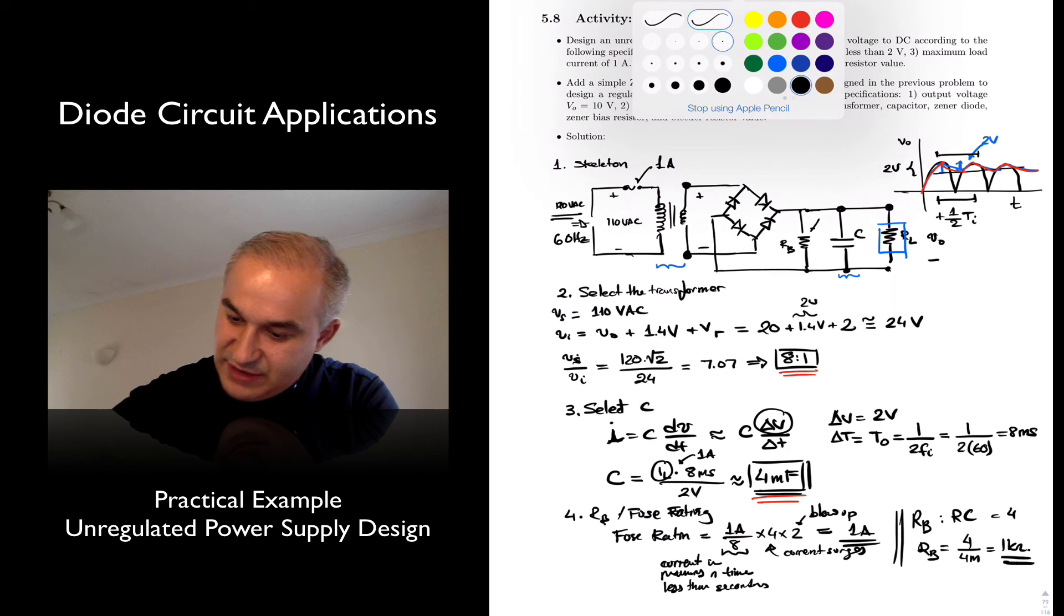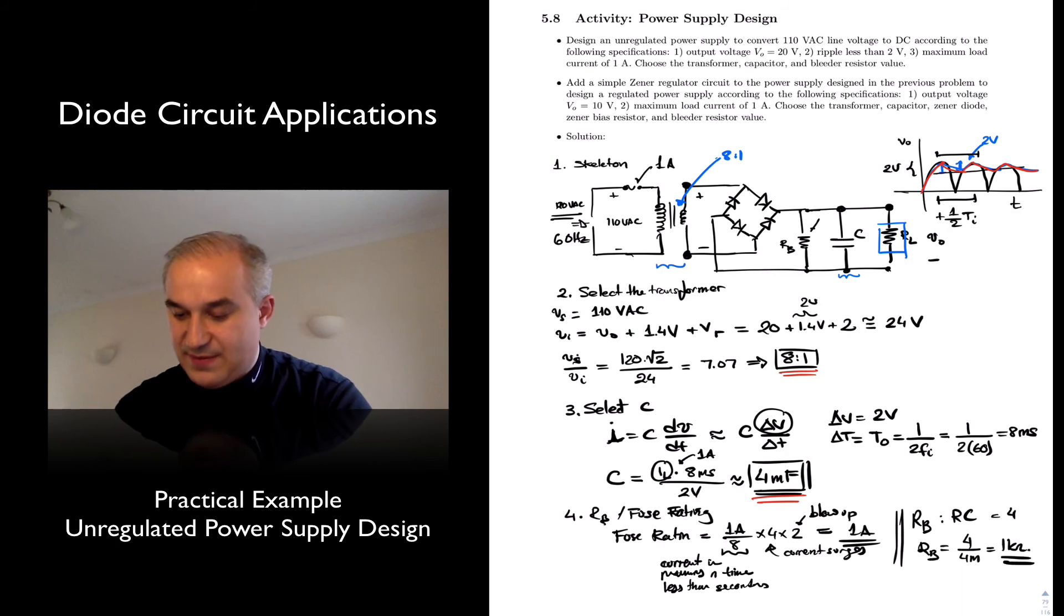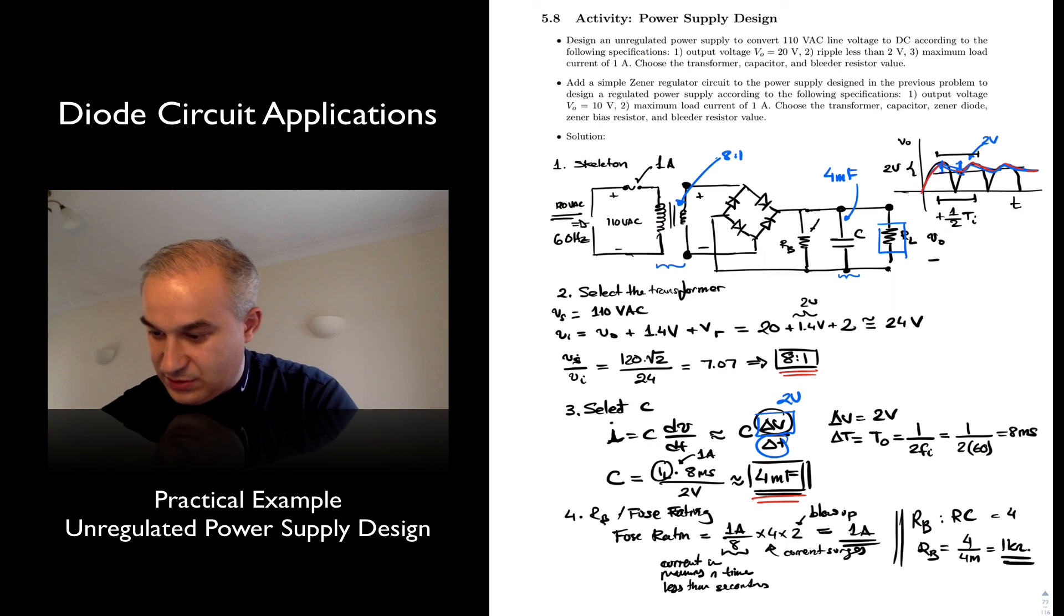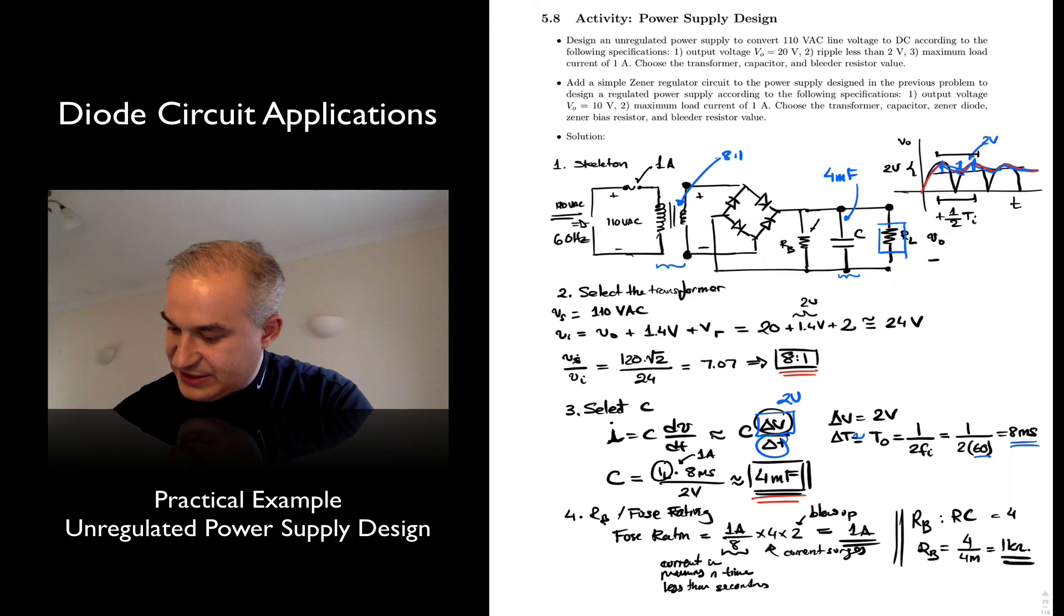So let's write this, what do we need. Step number one the skeleton, step number two we select an 8 to 1 transformer, step number three we look at the capacitor, four millifarads conservatively so that that's the maximum ripple that we have. This is easy to determine because we know what is the variation in voltage, two volts, how long does it take. In this case the period, we are being conservative, is approximately equal to eight milliseconds.